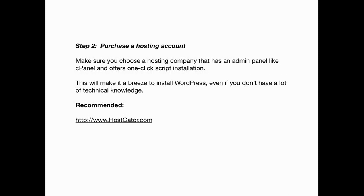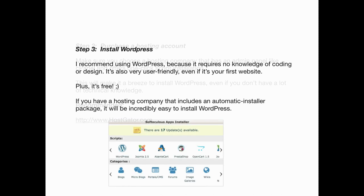Step two: purchase a hosting account. Make sure you choose a hosting company that has an admin panel like cPanel and offers one-click script installation — this will make it easy to install WordPress even if you don't have a lot of technical knowledge. Step three: install WordPress. WordPress requires no knowledge of coding or design, it's very user friendly even if it's your first affiliate website, and it's free.